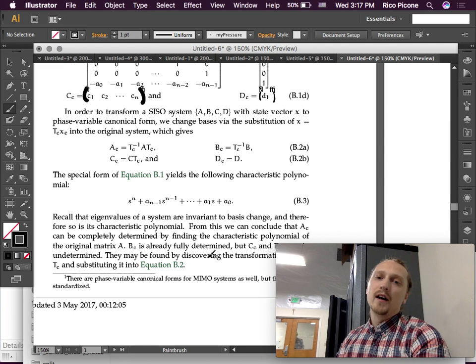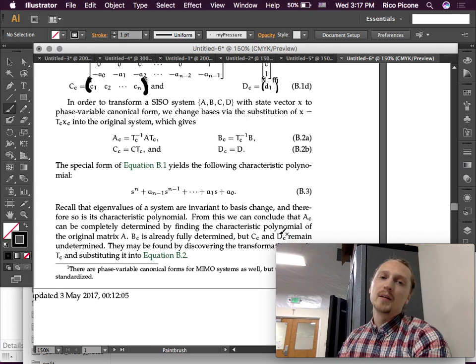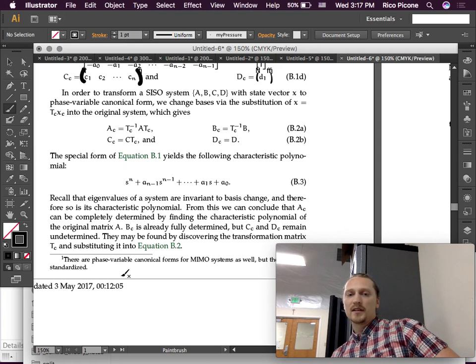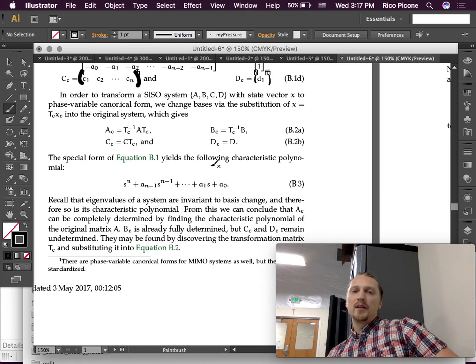Therefore, we can just simply find the characteristic polynomial of the original A matrix and we can find this AC form immediately because we know what all those A coefficients are from the characteristic polynomial, which is nice. BC is already fully defined, but CC and DC remain undetermined. They may be found by discovering the transformation matrix TC, which has always been implicit up to this point. We haven't actually found what it is, and substituting it into equation B2.